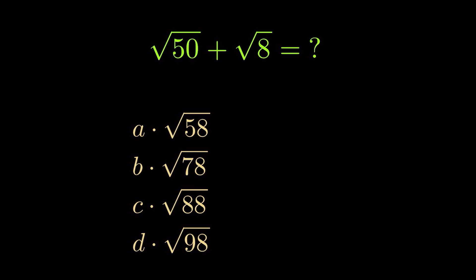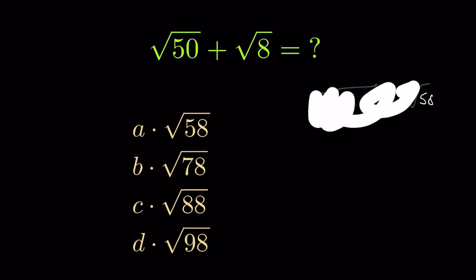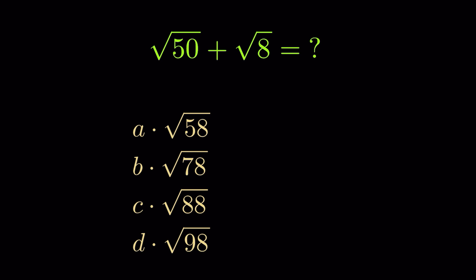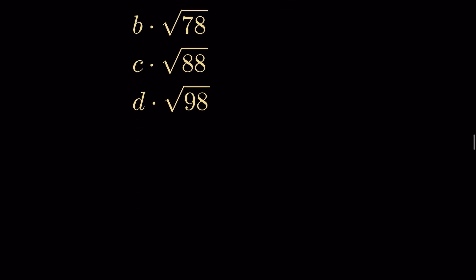Many are getting the wrong answer for this. If you simply add it as 50 plus 8 under square root, you will get square root of 58, but this is not how we solve radicals. To add radicals, we first need to simplify each of them.